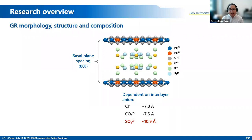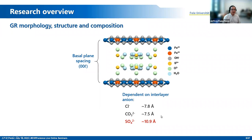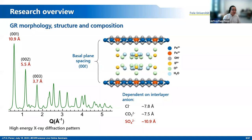Depending on the interlayer anion, the basal plane spacing between the iron hydroxide sheets can change. For planar anions such as chloride and carbonate, the basal plane spacing is somewhere between 7.5 to 7.8 Å. For the tetrahedral sulfate anion, it is around 11 Å. This interlayer anion is also reflected in the X-ray diffraction pattern of green rust. For example, here we have the XRD pattern of green rust sulfate, and the most intense reflection corresponds to the basal plane spacing of 11 Å.